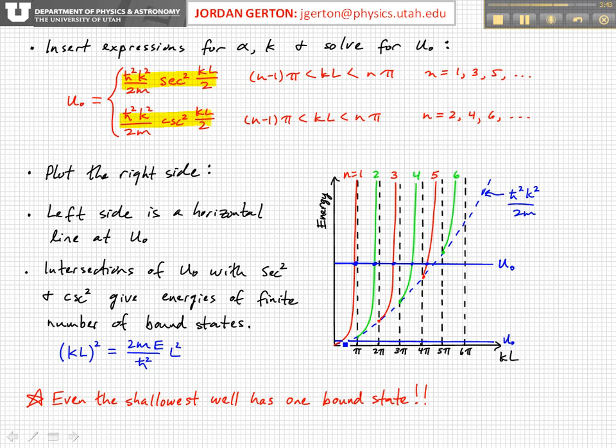Because there's always one intersection, at least one intersection of U naught with one of these solutions. And that simply is because this solution, this secant squared solution, intersects the origin on this graph.